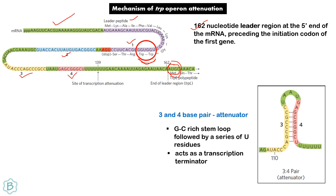When regions 3 and 4 form a base pair, there is a GC-rich stem-loop followed by U residues. This stem-loop acts as a transcription terminator.